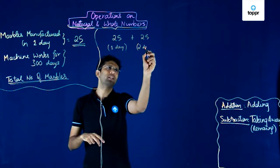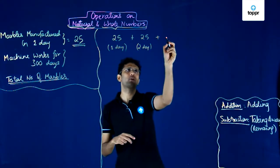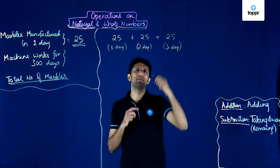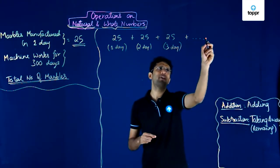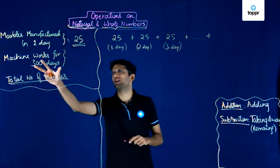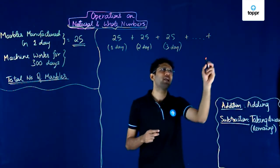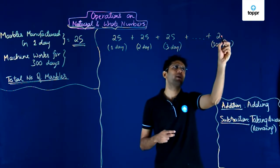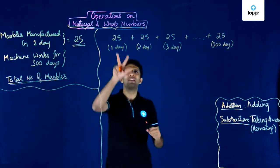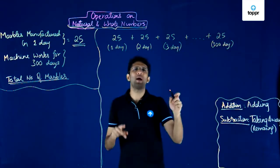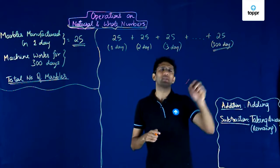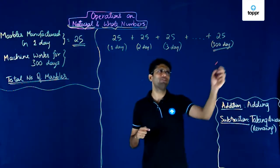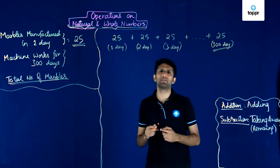So this will be the number of marbles made on the second day: 25. In a similar manner, on the third day also, we will have 25 more marbles being made. This process will continue till we finally come to the 300th day, because the machine works for 300 days. On the 300th day, again 25 marbles will be made. If we add 25 each time, we will have to add 25 three hundred times — that is 25 + 25 + 25 + ... 300 times — which gives the total number of marbles made in 300 days.